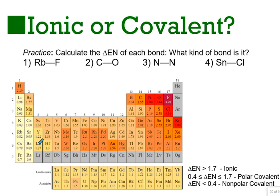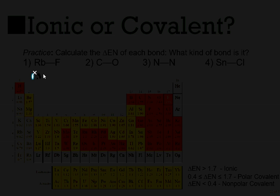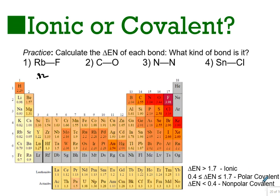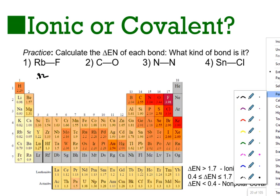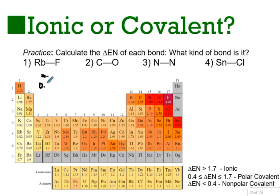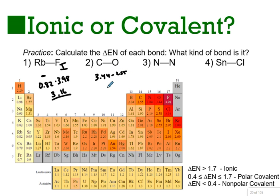For example: rubidium has an electronegativity of 0.82 and fluorine is 3.98 — the difference is 3.16, which is greater than 1.7, so we call that ionic. For carbon and oxygen, we have 3.44 and 2.55 — a difference of about 0.89, making it a polar covalent bond. Nitrogen and nitrogen have a difference of 0, so that's nonpolar covalent. Tin has an electronegativity of 1.96 and chlorine is 3.16, giving a difference of about 1.5 — so that's polar covalent, even though you might expect a metal-nonmetal pair to be ionic.